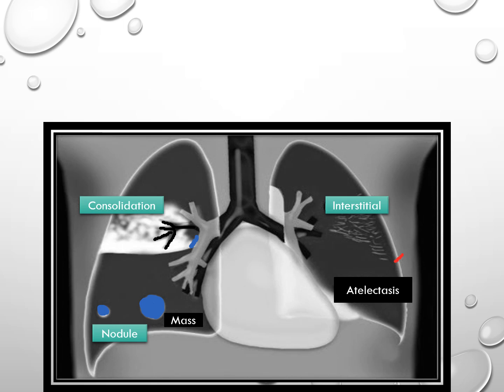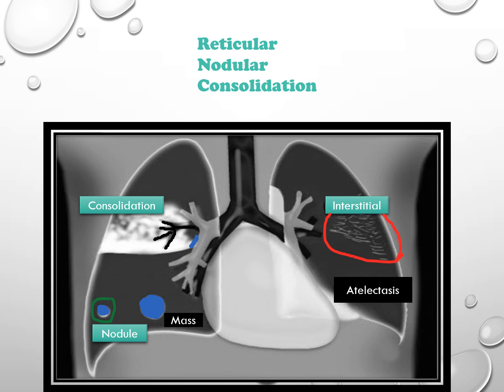In the assessment of chest x-ray, three patterns are typically evaluated: reticular, which indicates interstitial lung diseases; nodular; and consolidation, which is characterized by airspace disease displaying features like air bronchogram, silhouette signs, and diminished visibility of blood vessels.